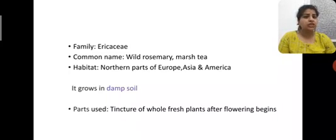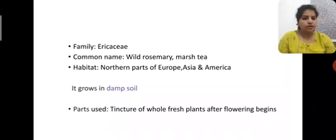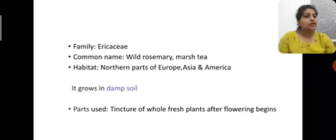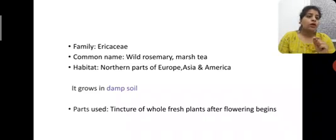This plant is found in the northern parts of Europe, Asia, and America, and even parts of Canada, wherever there is damp soil. The part used for preparation of the medicine is the whole fresh plant at the time of flowering — when the flower blossoms, it is used for medicine.